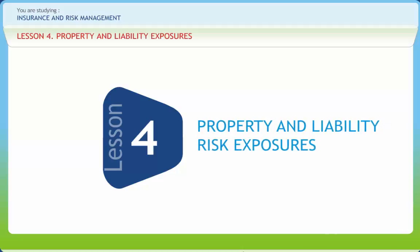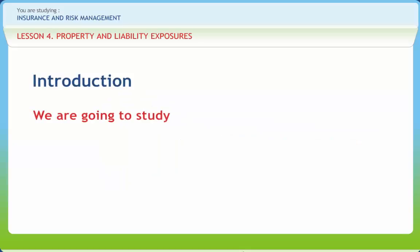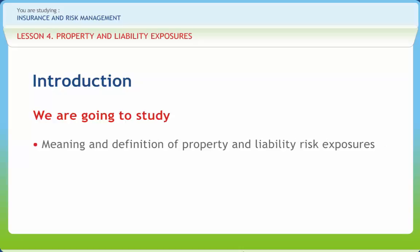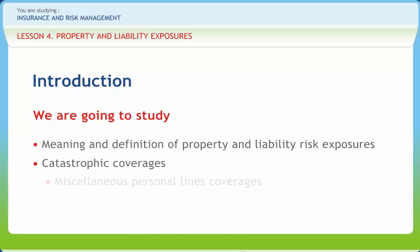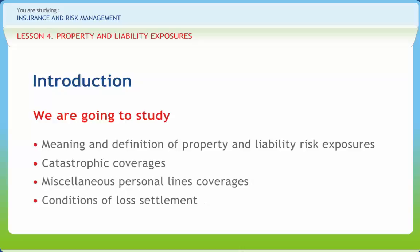Property and Liability Exposures. We all know property exposure includes loss or damage to facilities, equipment and equipment of others that might be on loan, leased or stored on your premises. In this lesson, we will study the meaning and definition of property and liability risk exposures, catastrophic coverages, miscellaneous personal lines coverages, conditions of loss settlement, and coverage to mitigate the business loss.